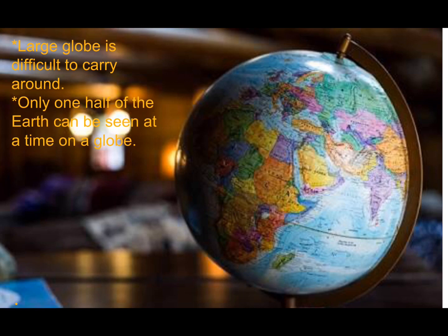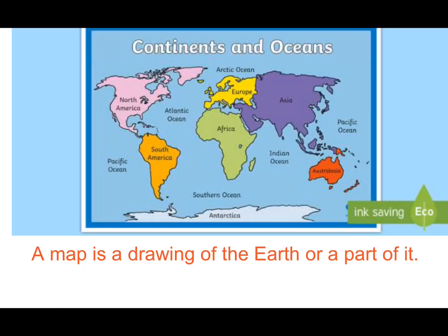These problems can be solved if we use maps. This is a map. A map is a drawing of the Earth or a part of it. Dear students, maps can be big or small. A book of maps is called an atlas.